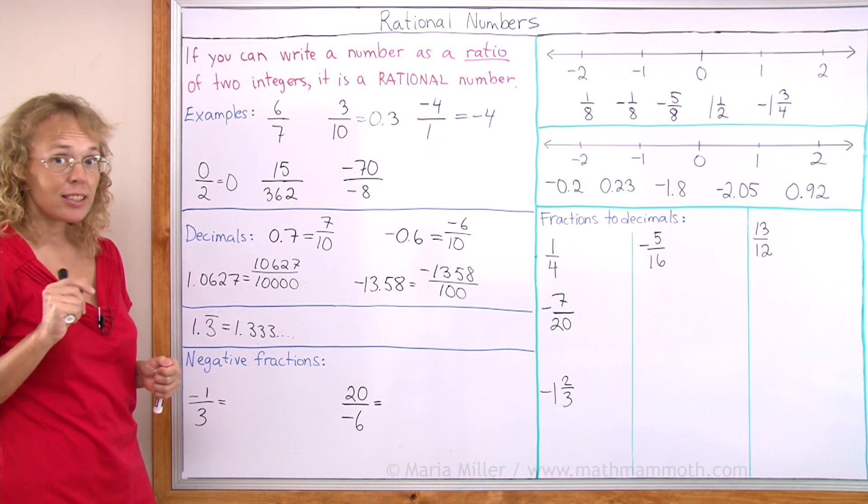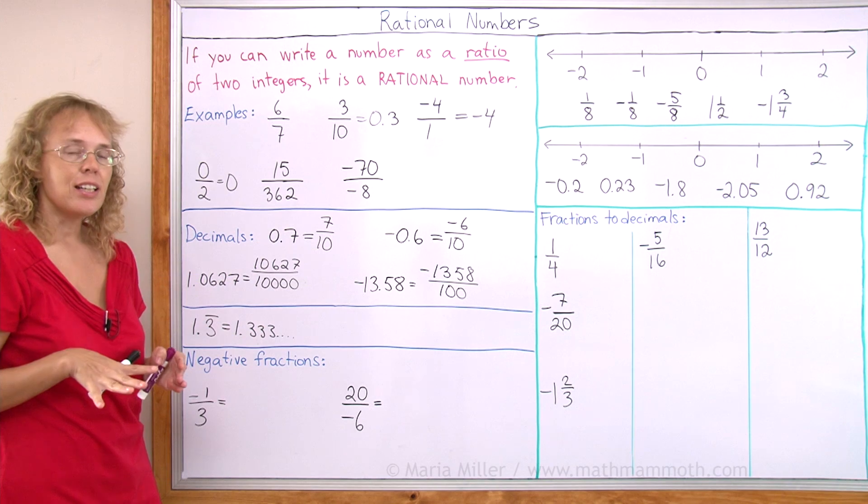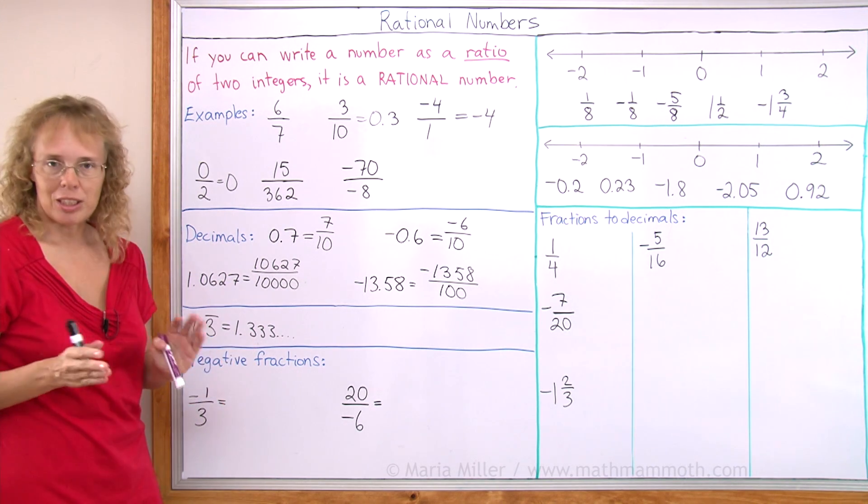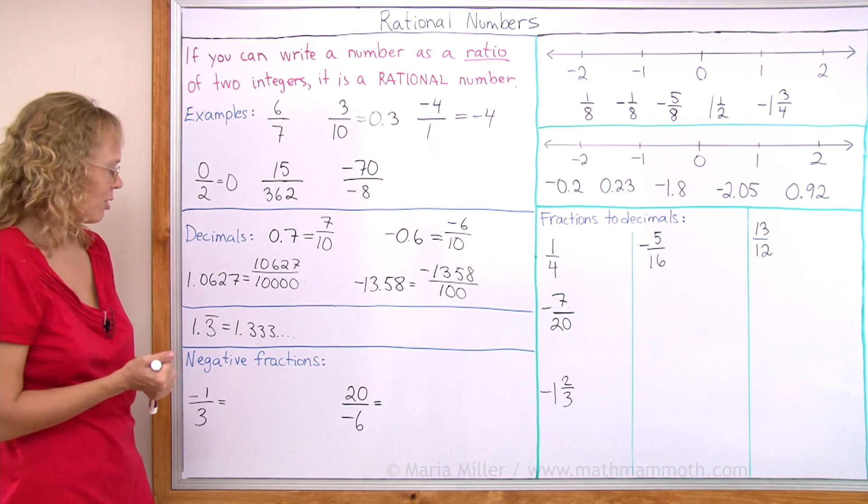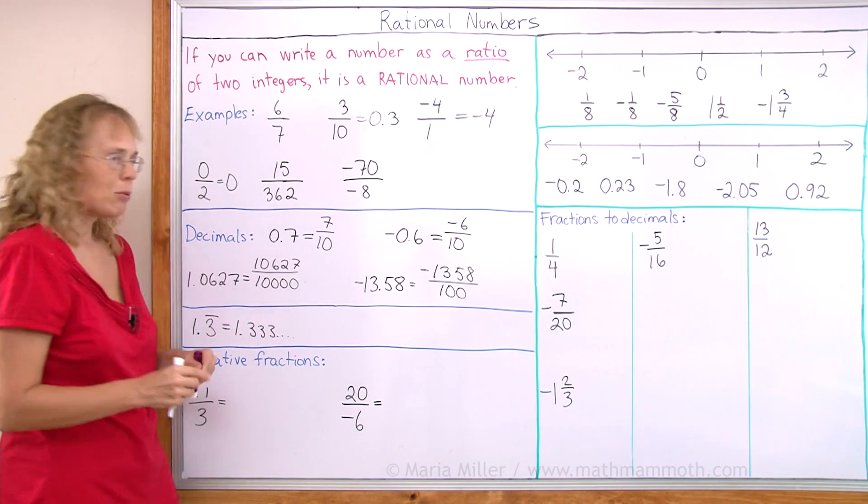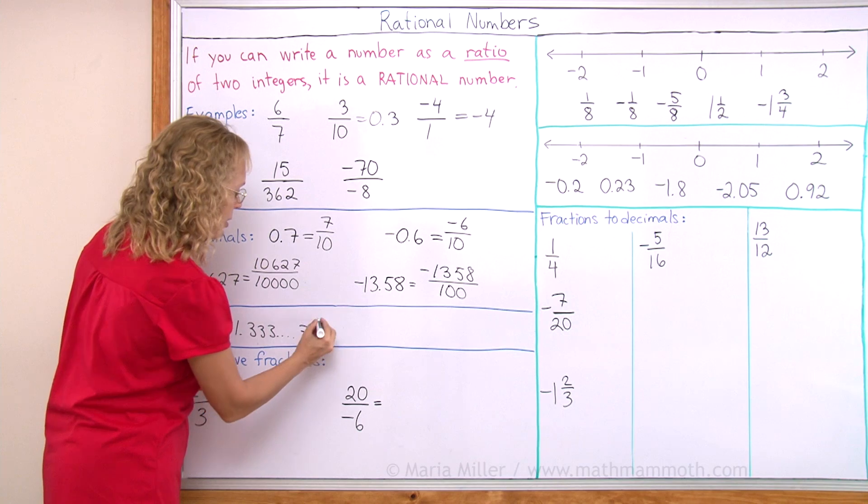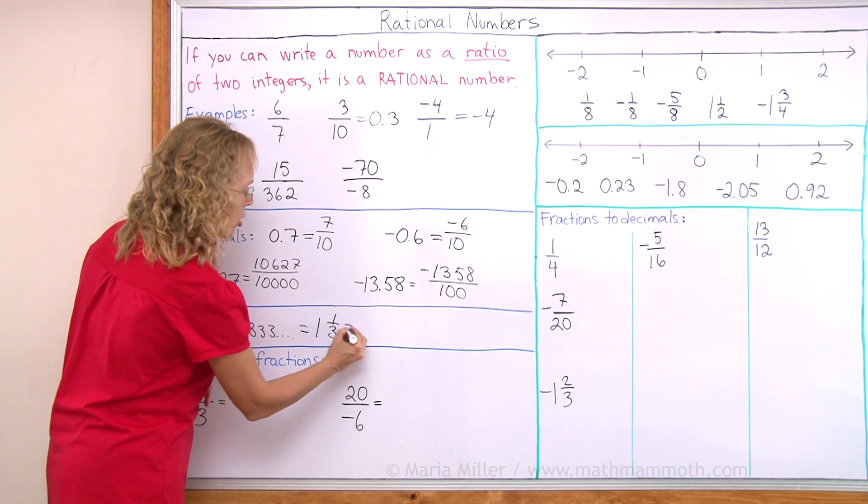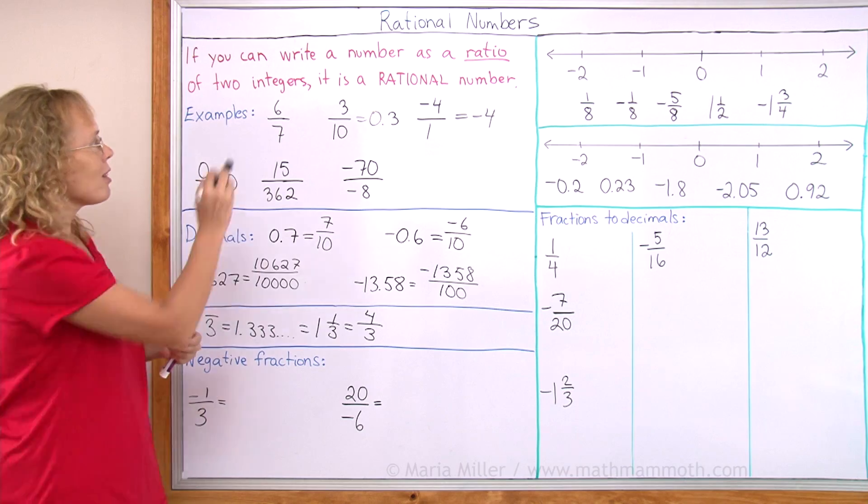If you remember, if you've done this ever before, where you have divided 1 divided by 3, and you got those repeating threes from that long division, then you know that yes, it can be written as a fraction. This decimal part would be one-third. Now, I have here 1, so this is the same as 1 and 1/3, which is, of course, 4 over 3 as a rational number in this format.